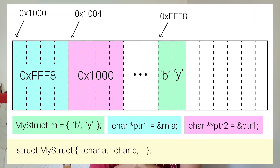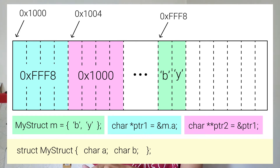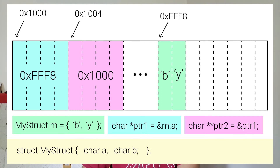Now a double pointer is a pointer to a pointer. Here we have a struct, my_struct, that has two fields, a and b. We instantiate an instance of my_struct and assign it to the variable m. We give its a field the value b and the b field the value y, so now b resides at fff8 and y resides at fff9. We can have char pointer pointer1 set to the address of m's a field, giving us fff8. We can also have a double pointer pointer2 that has the address to pointer1, which gives us 1000. We can actually have single, double, or triple pointers, but usually only single and double pointers are necessary.